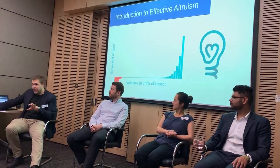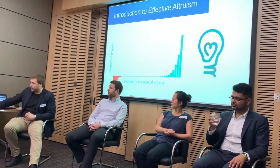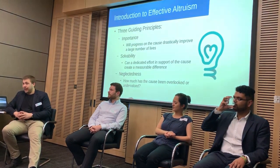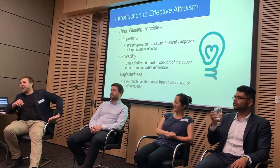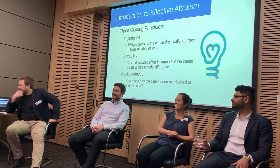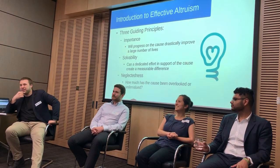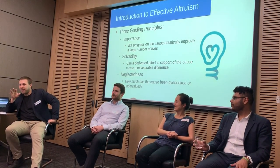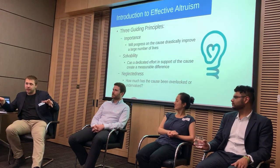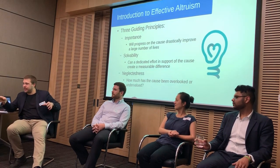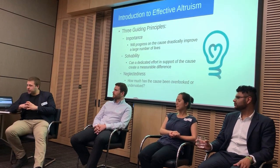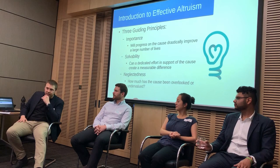Transitioning now specifically into politics, there are three guiding principles that are foundational to deciding what cause areas we, as effective altruists, should investigate. Those are importance, solvability, and neglectedness.